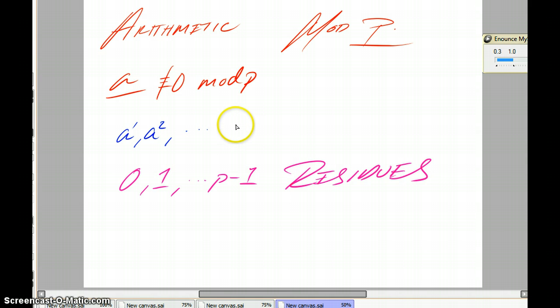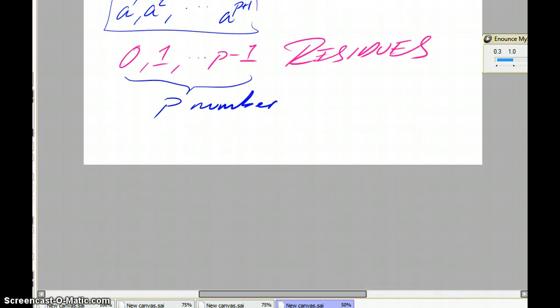Since this is the case, we know that some two of them must repeat of this sequence. Because if you have p plus 1 numbers, and this is a collection of p numbers, and let's say we go out to the a to the p plus 1 number, then there must be some repetition, because we cannot fill p numbers in this p plus 1 slots without repeating another one.